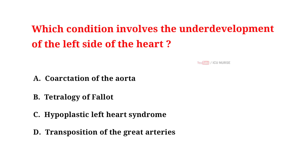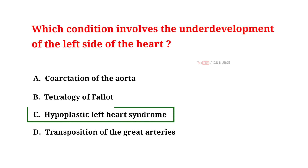Which condition involves the underdevelopment of the left side of the heart? A. Coarctation of the aorta. B. Tetralogy of Fallot. C. Hypoplastic left heart syndrome. D. Transposition of the great arteries. And the correct answer is C. Hypoplastic left heart syndrome.